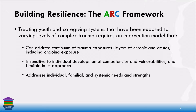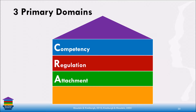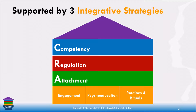The top-line version of what ARC is: three primary domains — attachment, regulation, and competency — thinking about skills we're developing, supported by three integrative strategies: engagement of the caregiving system at a variety of levels, psychoeducation, and routines and rituals as a holding element. All of this is in service of one overarching goal: trauma experience integration.